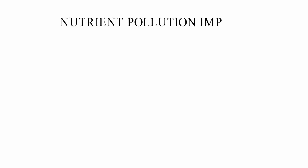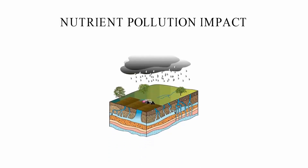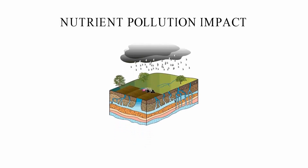Nutrient pollution is when too many nutrients build up in water, causing algae to grow quickly. If the water has too much phosphorus and nitrogen, this type of pollution is more likely to happen.